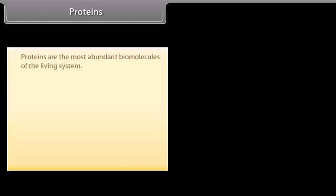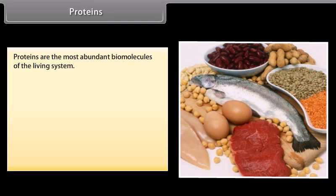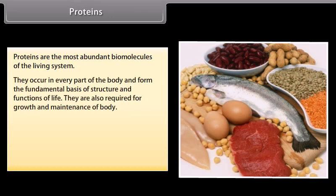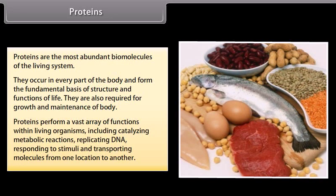Proteins are the most abundant biomolecules of the living system. Chief sources include milk, cheese, pulses, peanuts, fish, meat, etc. They occur in every part of the body and form the fundamental basis of structure and function of life. They are required for growth and maintenance and perform a vast array of functions — including catalyzing metabolic reactions, replicating DNA, responding to stimuli, and transporting molecules.